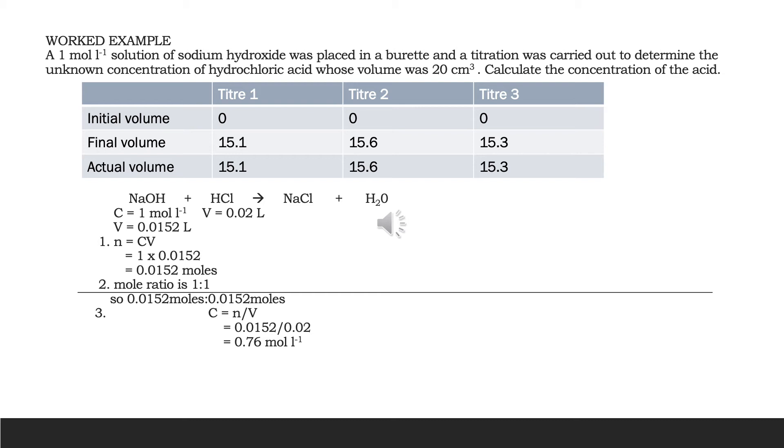So finally on to calculation. A one mole per litre solution of sodium hydroxide was placed in a burette and a titration was carried out to determine the unknown concentration of hydrochloric acid whose volume was 20 cubic centimetres. Calculate the concentration of the acid. Now you can see here that there's a table of results. So the sodium hydroxide was inside the burette and three titrations took place. They were only interested in titer 1 and titer 3 because they are concordant. They are within plus or minus 0.2 cubic centimetres.